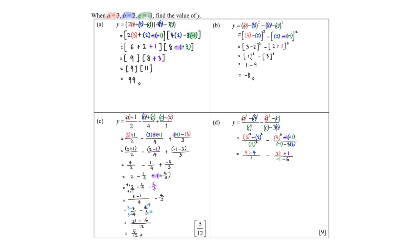I'm going to simplify each numerator first before I continue. 9 minus 4 is 5, over 1. This will be useful later. This will be 28 over negative 7. So 5 divided by 1 is 5, minus this particular value which will become negative 4.